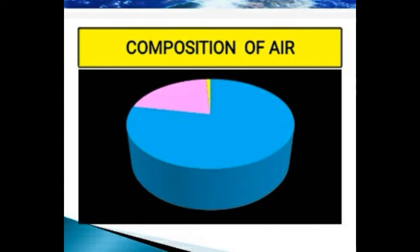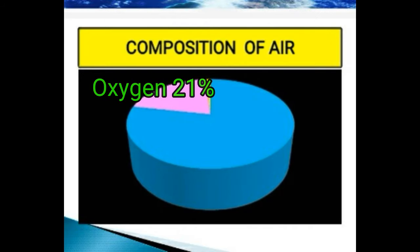The atmosphere is a mixture of colorless, odorless, and tasteless gases. The composition of air is not uniform — it varies from place to place and from time to time. It is composed of gases, water vapor, dust particles, and smoke. Nitrogen is 78% and oxygen is 21%, making them the two main gases. The remaining 1% is other gases. The heavier gases like oxygen, water vapor, and dust particles are found in the lower layers, and at many places impurities like smoke, salts, carbon monoxide, and other chemicals are also found.